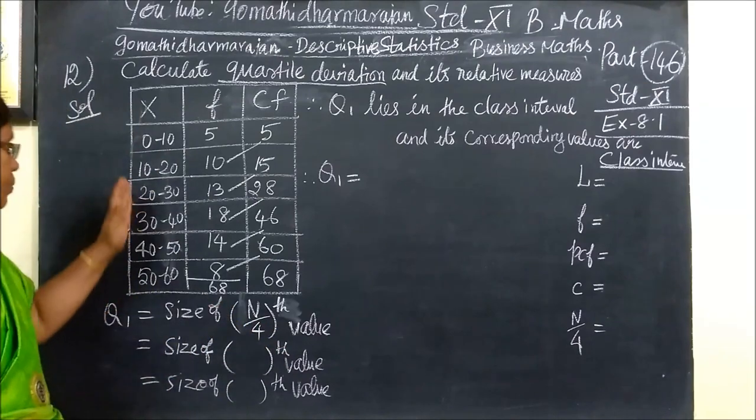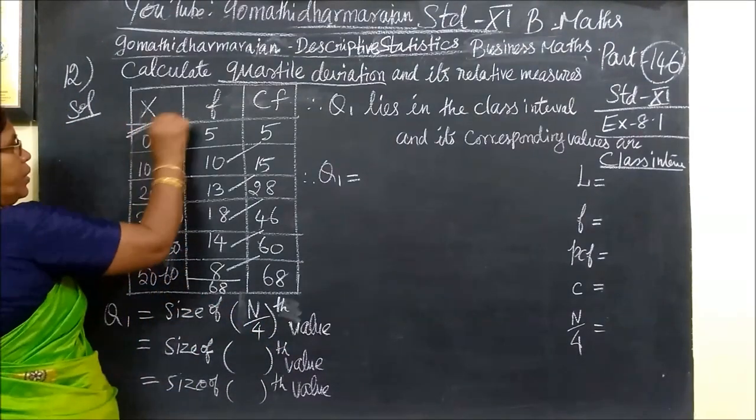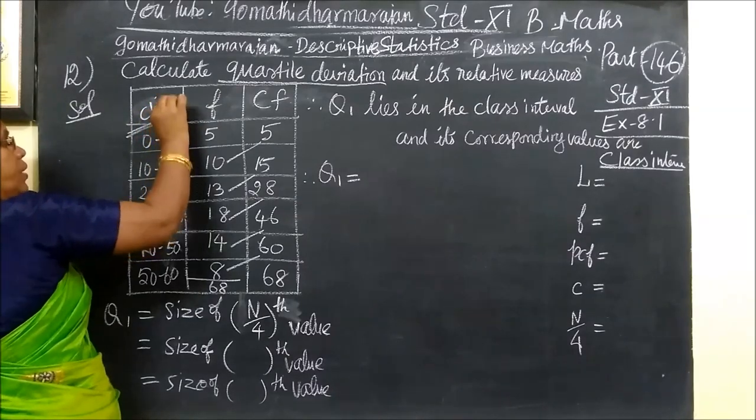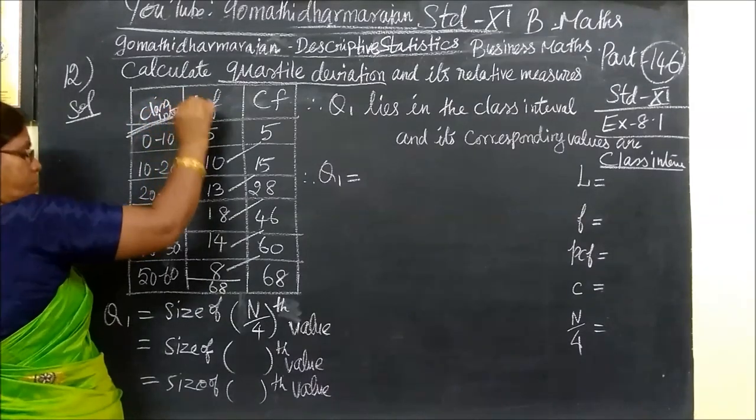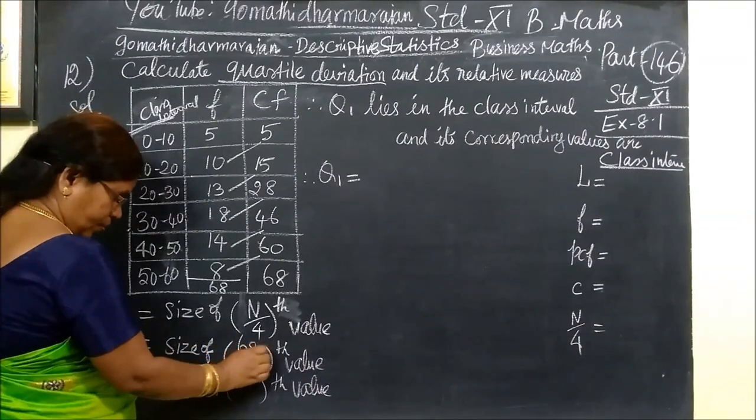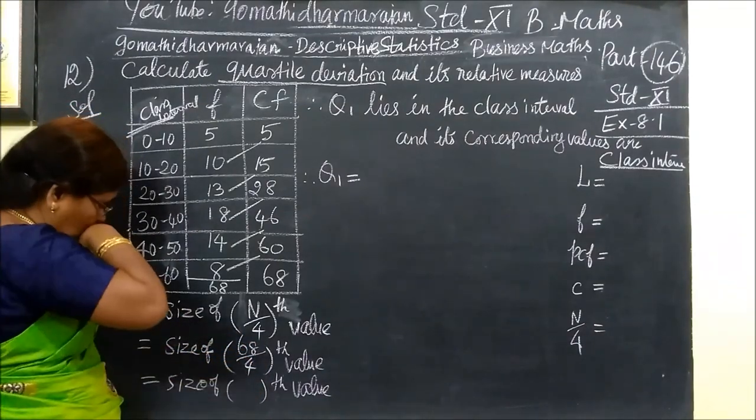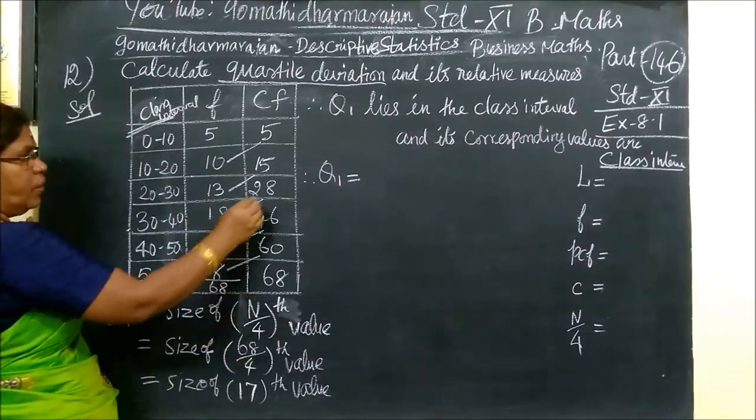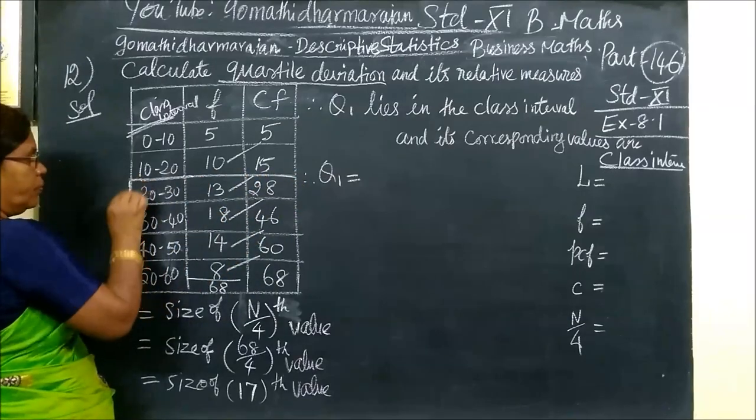To find the class interval, n is 68, so it's 68 by 4, which equals 17. The 17th value is what we need to locate in the class interval.